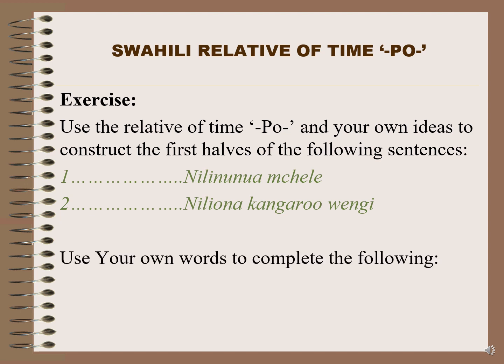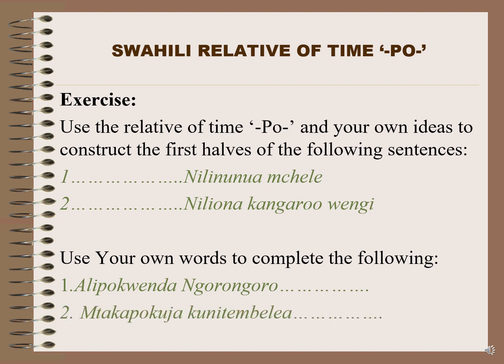Exercise number two: use your own words to complete the following sentences. Number one: 'Alipokwenda Ngorongoro' dash dash dash — When he or she went to Ngorongoro, fill in the blank. Number two: 'Mtakapokuja kunitembelea' — When you come to visit me, fill in the blank.